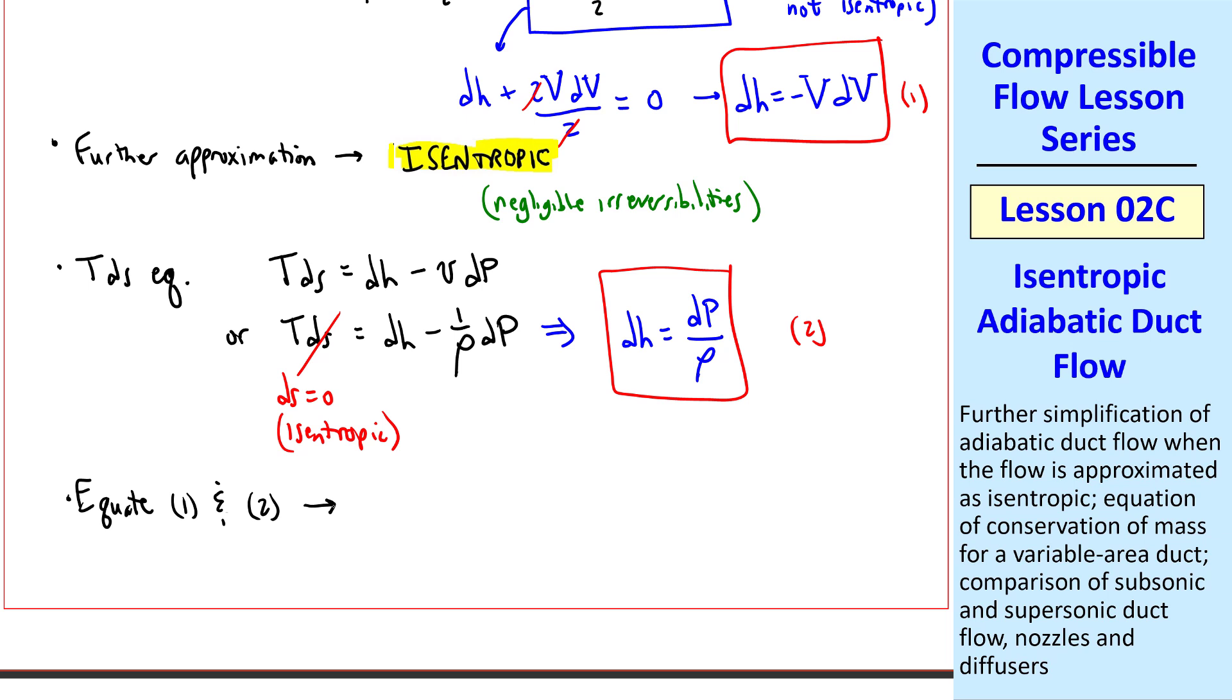If we equate equations 1 and 2, we have negative V dV equal dP over rho, which I'll call equation 3.